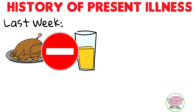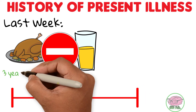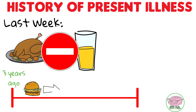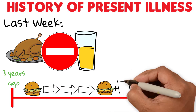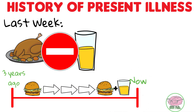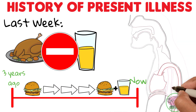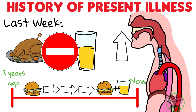He has had similar problems before, starting around three years ago, but was mainly with solid food, and it has worsened steadily ever since. This week was particularly difficult because he had to eat slowly, extend his neck, and adopt postures in order for food to go down into the stomach.